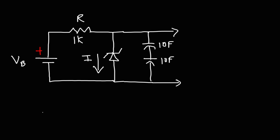Initially, these two capacitors are not charged — the voltage across them is zero. Once you connect this circuit to a 9 volt battery, we know the voltage across the zener diode is 3.3. But because the capacitors are completely discharged, initially the voltage you'll read will be zero volts. It's going to take some time for the capacitors to charge up from zero to 3.3 volts. To increase the charging speed, you may need to decrease the resistance. But once they reach 3.3, the output voltage will be relatively constant.